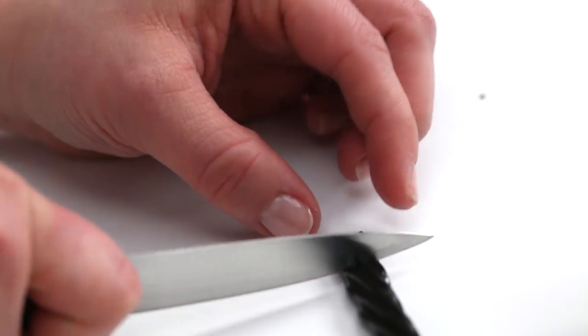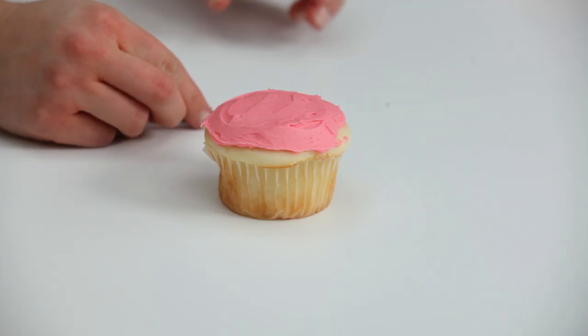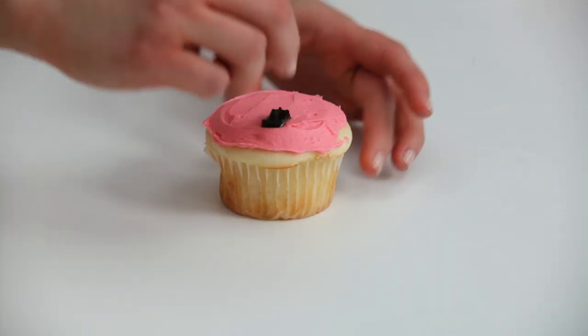Cut two quarter inch pieces from black licorice to make the eyes. You can also use black fondant. Place the licorice pieces on the cupcake.